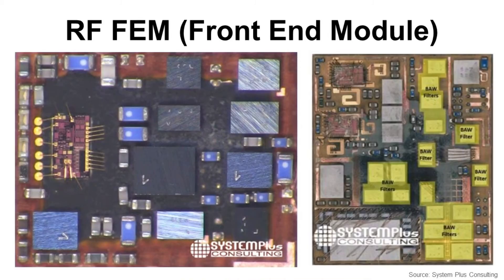There are also wafer-level CSP packages. These are another example. You can see some dies with wire bonding, passive components, and wafer-level CSPs. Nowadays, more wafer-level CSP packages are used in SIP, so you can easily find those packages in SIP.